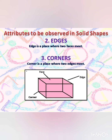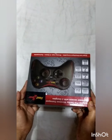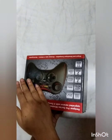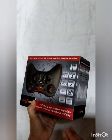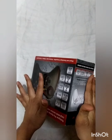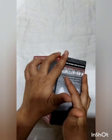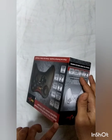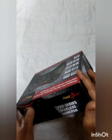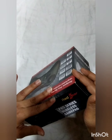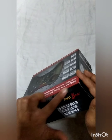The other attributes are edges and corners. An edge is a place where two faces meet, and a corner is a place where two edges meet. Now let's observe the attributes of this box. As you can see, this is the surface, which is the face of the box. The place where two faces meet forms the edge of the box.